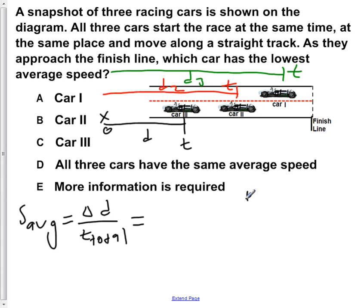Of these distances, D is smaller than D two and D one is greater than all of these. So, we can see that here, car three will have the smallest average speed because it has gone the smallest distance in the total amount of time.